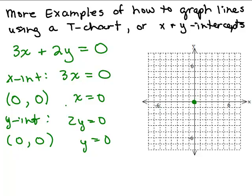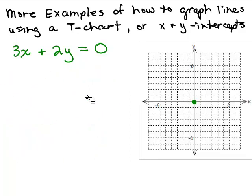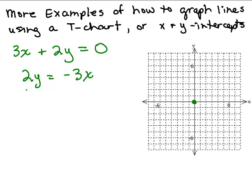That's one of the methods we could use. It's just that the X and Y intercept method will not work. All right, so I at least have the (0, 0). So there's nothing wrong with leaving that as one of my ordered pairs, but let's go ahead and try solving for Y. So if I solve for Y, I'm going to subtract 3X from both sides and then divide by 2 so that Y equals negative 3 halves X.